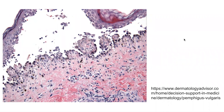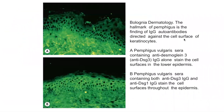The blisters in Pemphigus vulgaris are usually non-inflammatory; however, neutrophils and eosinophils can be present within and around the blister cavity. In the immunofluorescence images, we can see IgG autoantibodies directed against keratinocytes as demonstrated via fluorescence from anti-Desmoglein 3 IgG. In the image below, Pemphigus vulgaris serum containing both anti-Desmoglein 3 and anti-Desmoglein 1 autoantibodies stains the whole epidermis throughout.